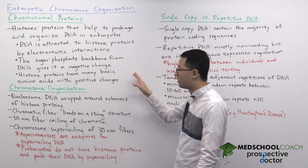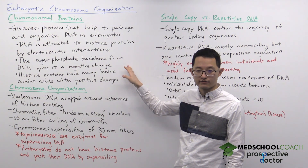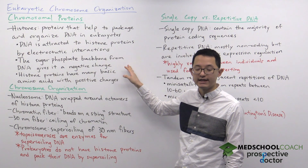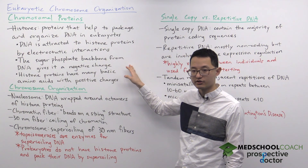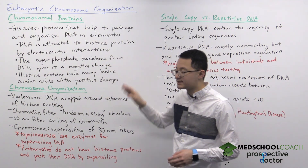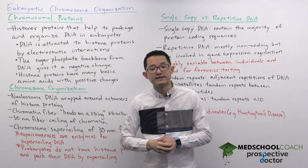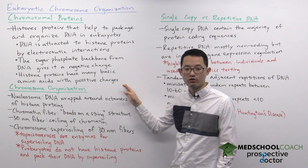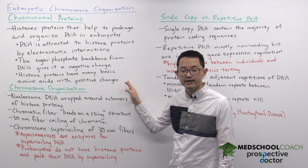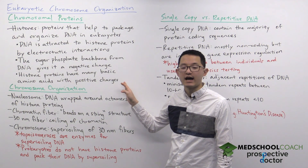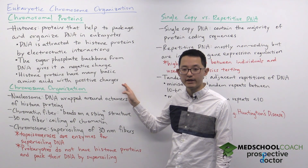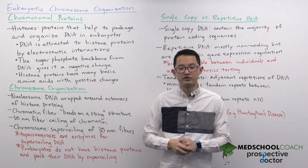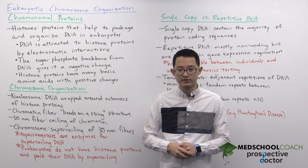As you recall, DNA has a sugar-phosphate backbone that gives DNA a negative charge. That means the histone proteins have to have a positive charge, which is correct. Histone proteins have a lot of basic amino acids with positively charged side chains.